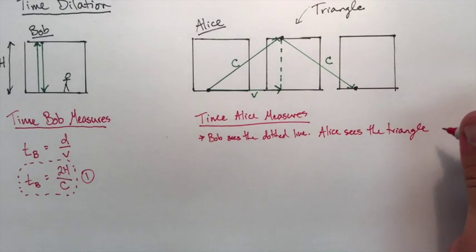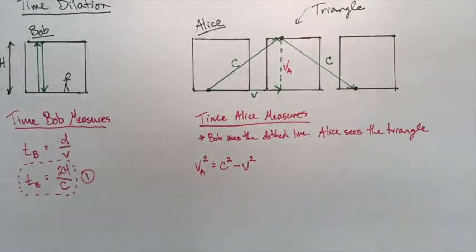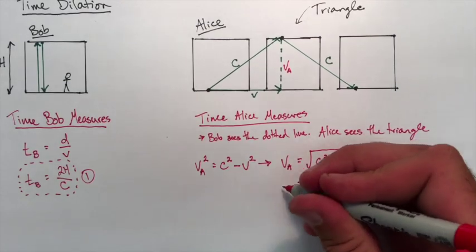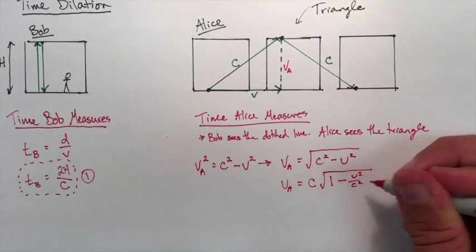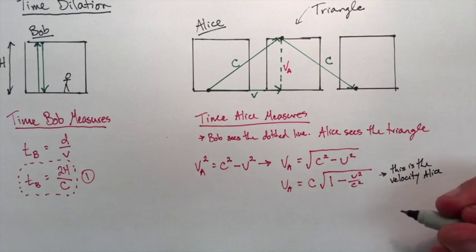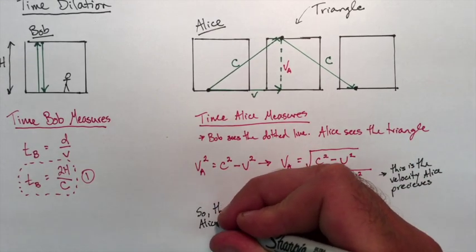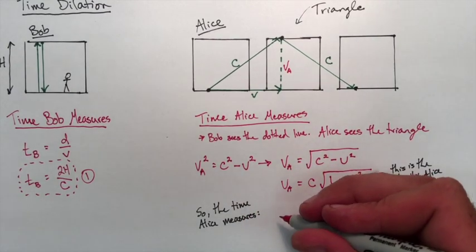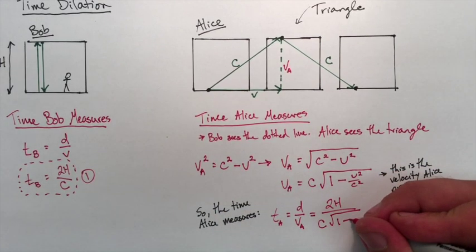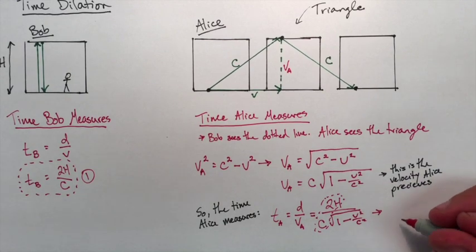But what Alice wants to do is she wants to create a mathematical expression to explain that dotted line, so we'll call that VA. So VA for velocity of Alice—it's basically Pythagorean theorem, so we can make an expression for VA here. We factor out the c and we get a root: one minus v squared over c squared. So again, this is the velocity that Alice perceives. Now what we can do is we can find out the time that Alice measures. Again, it's a constant velocity formula, so time for Alice equals d over her velocity that she sees, VA. We have that expression, so we can put that in. Again, the distance is 2h, but what we notice here: we have 2h over c, which is the expression for Bob. So now we can relate the time that Alice measures to the time that Bob measures in this formula here.